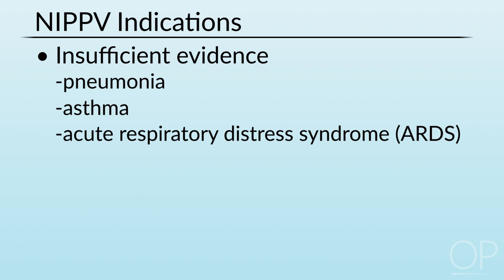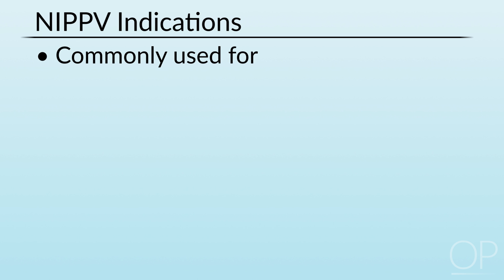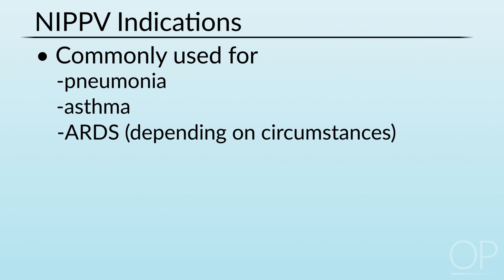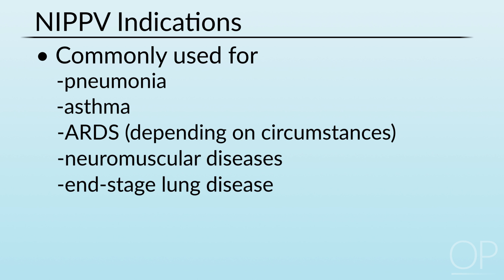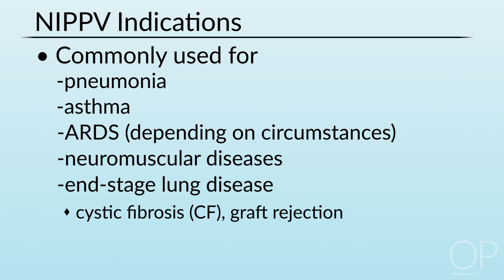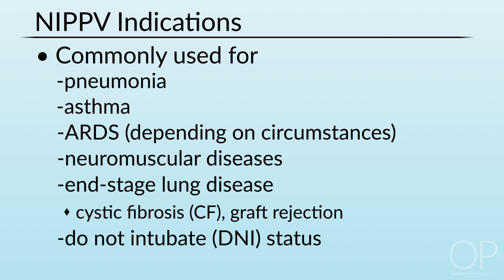A list of diagnoses we often consider for non-invasive positive pressure ventilation includes pneumonia, asthma, some cases of ARDS depending on severity and patients' wishes for intubation, neuromuscular diseases, end-stage lung disease such as cystic fibrosis or transplant recipients with graft rejection, and patients with a do-not-intubate status.